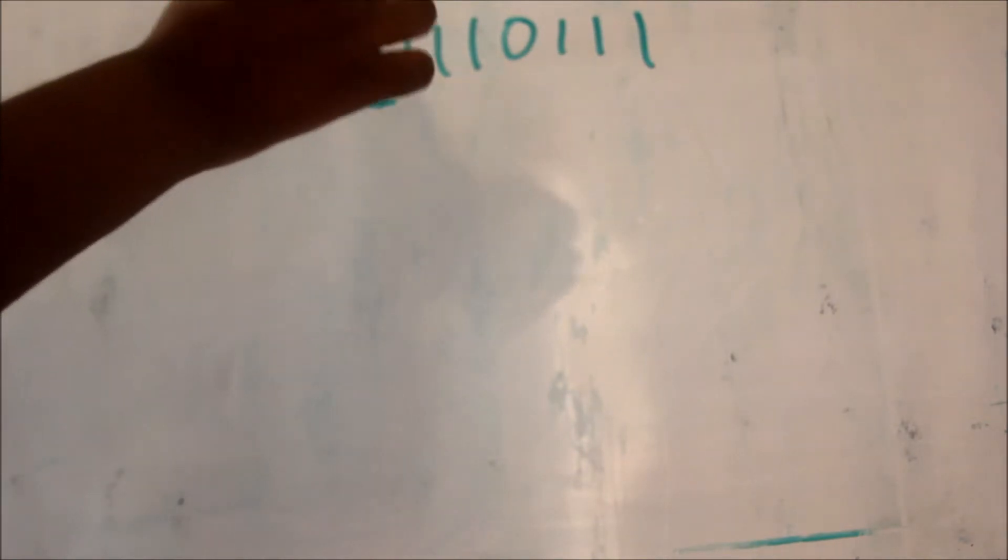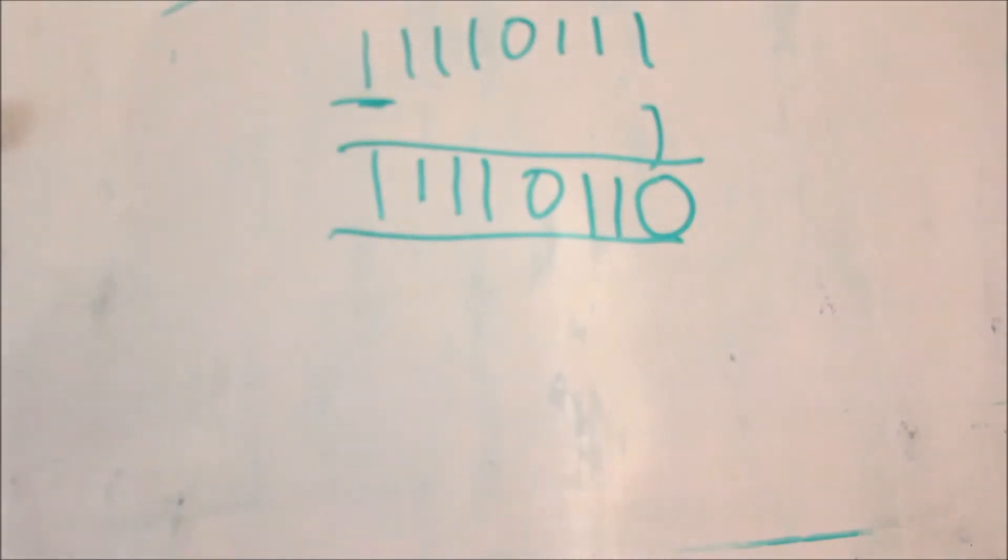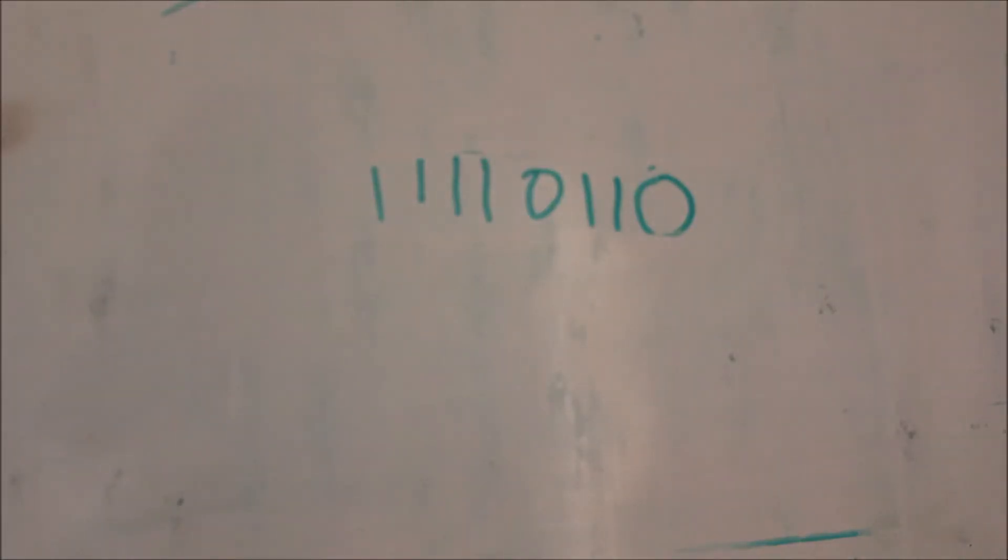And then the second step is to subtract 1 from the number. Because you have identified it as negative, so now you subtract 1. So, now you have this number.